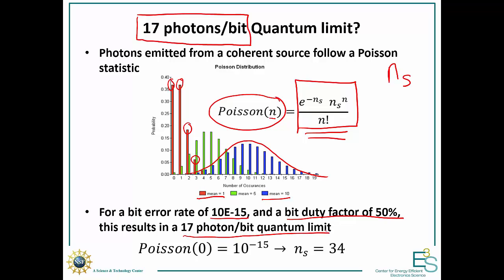Well, this results in a 17 photon per bit quantum limit. What does that mean? That means that if you're, on average, sending 17 photons per bit, well, you have 10 to the minus 15 chance of seeing zero. And so, one minus 10 to the 15 of seeing at least one photon. And that's how we come to this 17 photon per bit quantum limit.